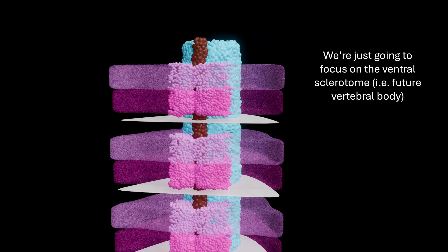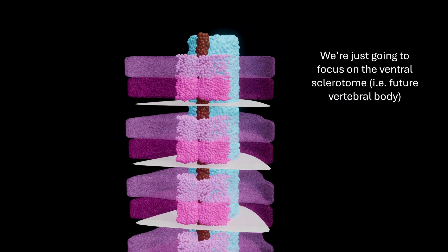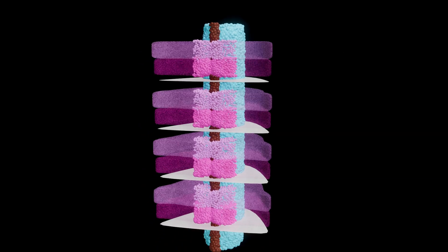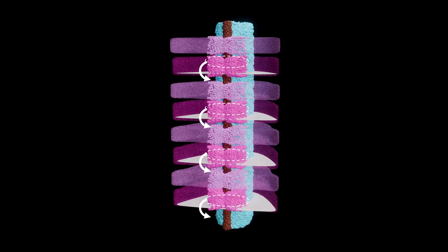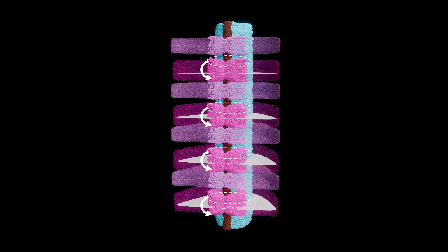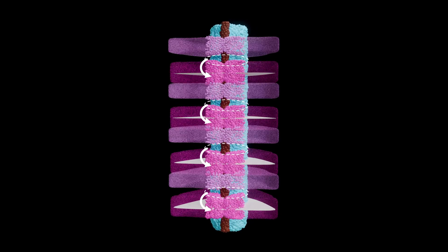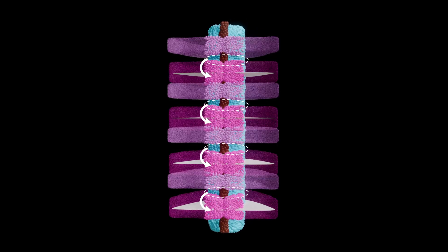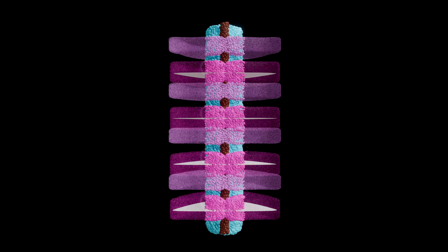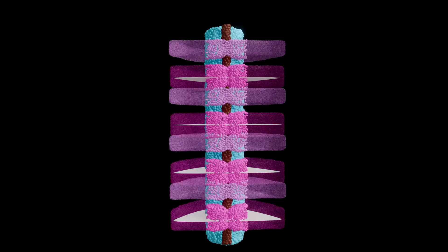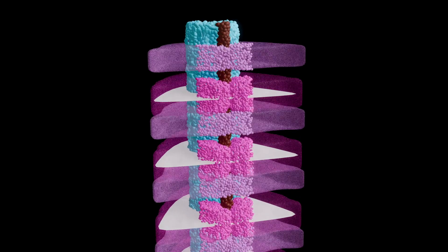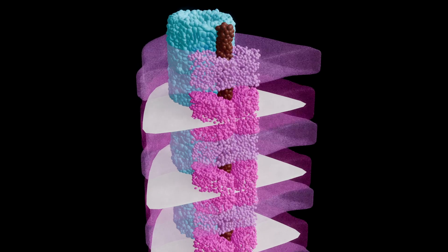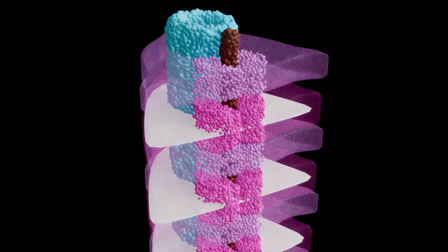For the resegmentation move itself: cells from the dense caudal half of one somite fuse with the loose cranial half of the next somite, and together they build a single intersegmental vertebral body called the centrum. It's called intersegmental because it forms between the original somite boundaries, not inside just one alone.